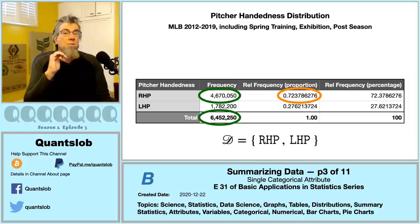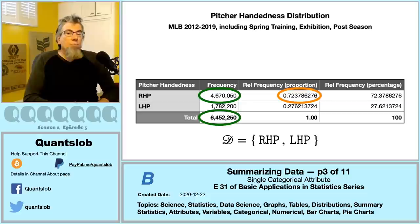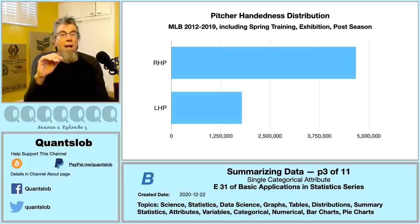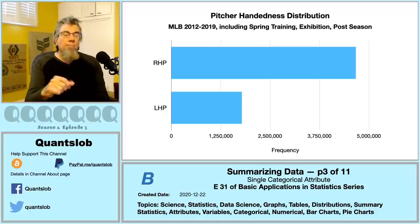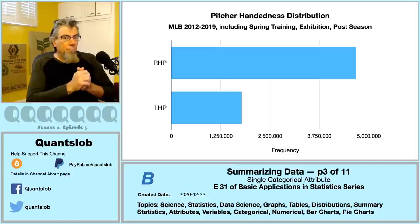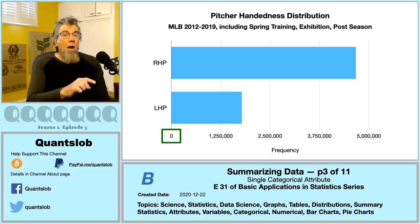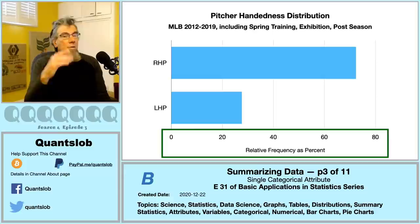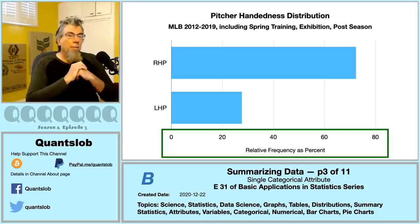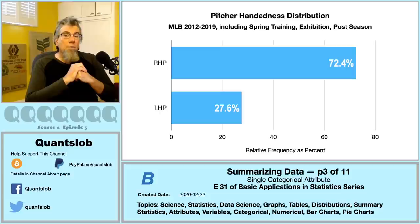For graphical representations of a categorical variable, we have two popular options: bar chart and pie chart. A horizontal bar chart is probably preferable. The bars are horizontal, and the length of the bars conveys popularity. Importantly, the bars start at zero on the left. We can also convert frequency into relative frequency — percent — by dividing category frequencies by the total number of cases and multiplying by 100. We can embellish our bar chart to explicitly show the percents of each category directly in the graph.